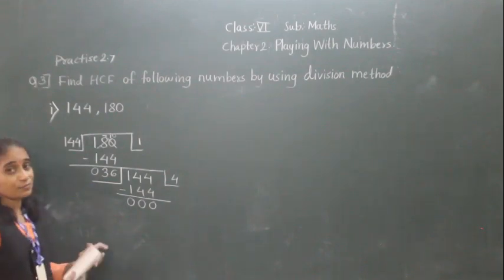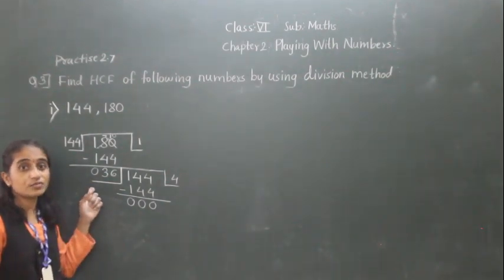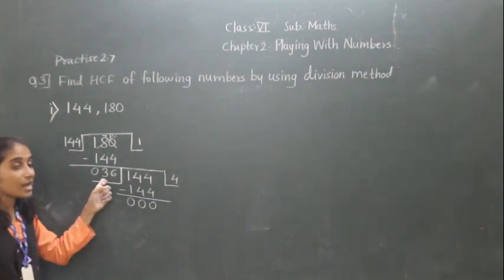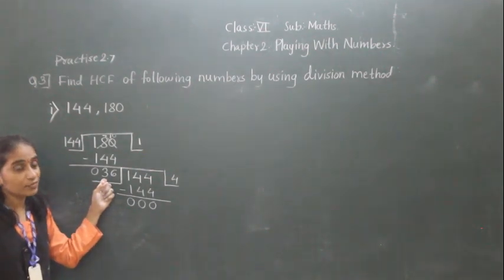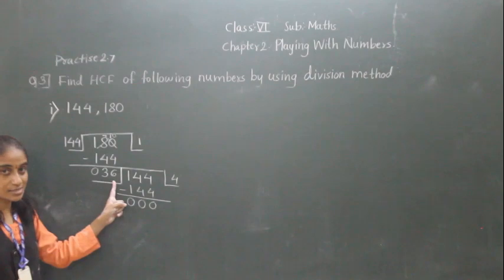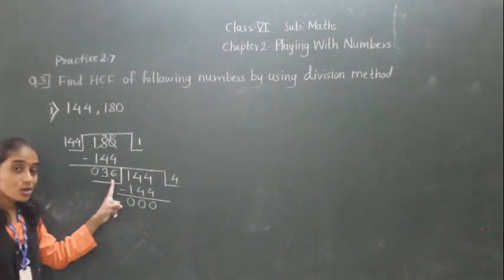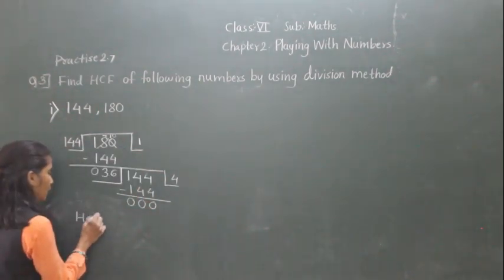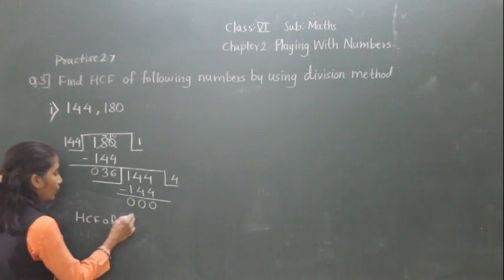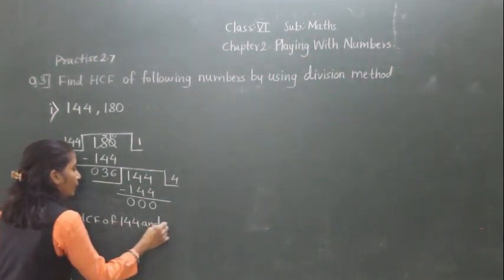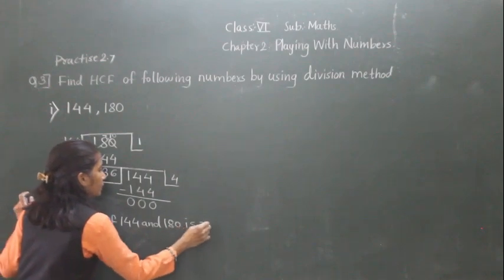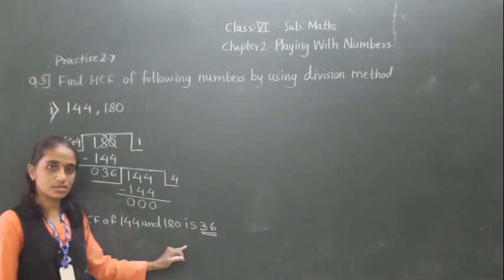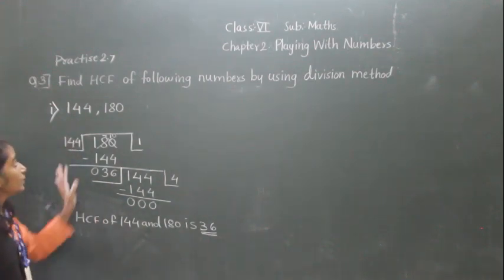Now what does remainder 0 mean? The divisor of the last step is the HCF. The divisor of the last step is the HCF. Now which is the last step divisor? This is the last step. So the HCF of 144 and 180 is 36.